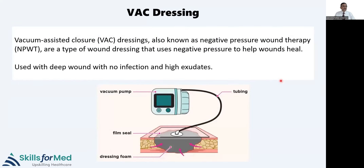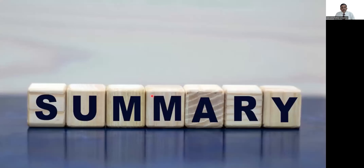VAC dressings, also known as Negative Pressure Wound Therapy (NPWT), use a watertight seal on the wound connected via a tube to a motor running 24/7. Exudate is continuously drawn out and stored in a reservoir, maintaining moisture balance while removing excess exudate. This causes dramatic improvement in wound healing times — wound edges come together. VAC dressings can be kept for about five to seven days, but you must be very selective in choosing the right wound for this treatment.